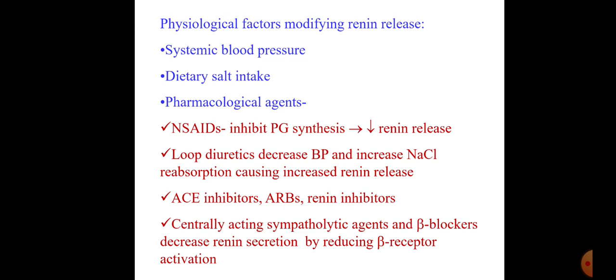Physiological factors modifying renin release include systemic blood pressure, dietary salt intake, and pharmacological agents. Prostaglandins increase renin release, so NSAIDs decrease renin release by decreasing prostaglandin production. Loop diuretics decrease blood pressure and increase sodium chloride excretion, so less salt and water are sensed by the macula densa, resulting in increased renin release. ACE inhibitors, ARBs, and renin inhibitors are drugs that modify the RAS. Centrally acting sympathetic agents and beta blockers decrease renin secretion by reducing beta receptor activation.